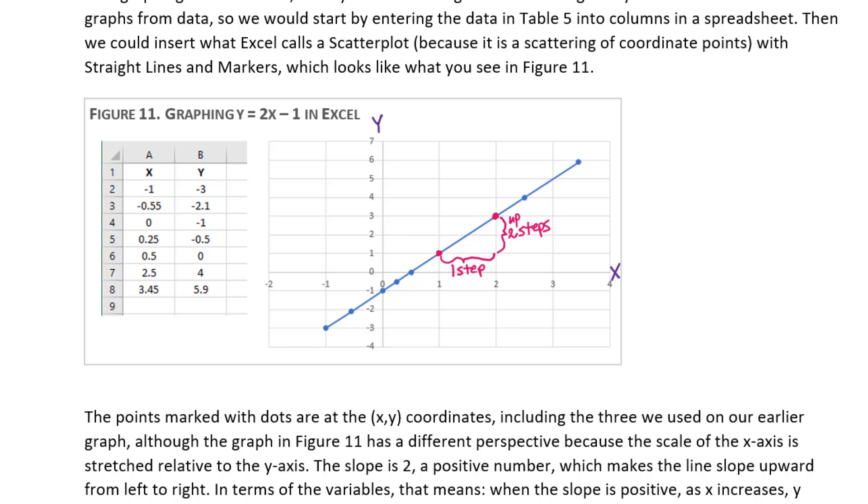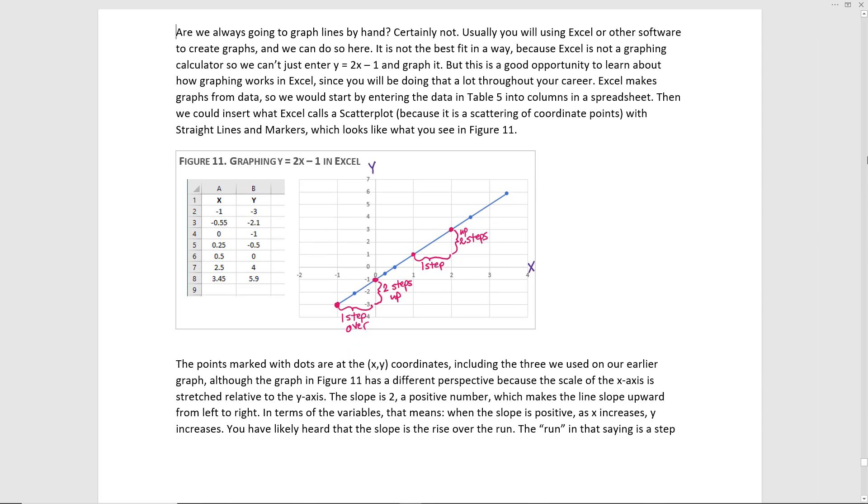You can see that is replicated for any step of 1. If we took the step from negative 1 to 0 on the x-axis, we're getting one step here. To get from the first point to the second, we go from negative 3 on the y-axis to negative 1 on the y-axis. So that is a step up the y-axis of 2. One step over means two steps up.